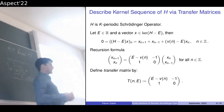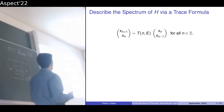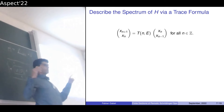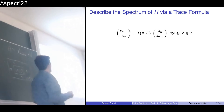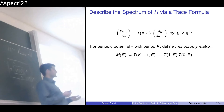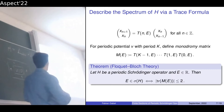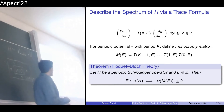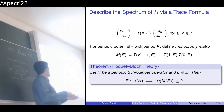How can we describe the spectrum of H using transfer matrices? We define a new matrix that is the product of all our transfer matrices — the monodromy matrix. Then Floquet-Bloch theory and the trace map formalism gives us a very nice result: a real number E lies inside the spectrum of a periodic Schrödinger operator if and only if the absolute value of the trace of the monodromy matrix is less than or equal to 2.